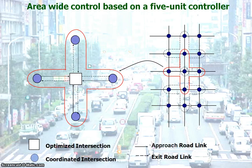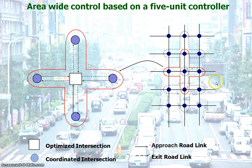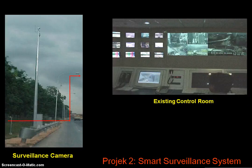We borrowed the architecture from Yagar, from his publication in 1996. This is a fully distributed system where each traffic light coordinates its actions with its neighbors, and those neighbors coordinate with their neighbors, and so on. Because of this, the whole city network is coordinated to optimize traffic flow.